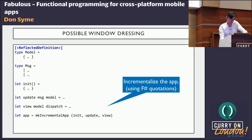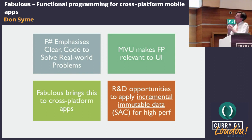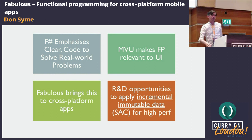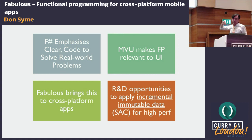To summarise: I've told you a little bit about F-Sharp — clear code to solve real-world problems. MVU makes functional programming very relevant to UI, and that message is starting to spread even to the deep depths of Microsoft, where I've talked about this to the people who provide UI frameworks to about half the world's programs. Fabulous brings it to cross-platform apps, and there are applied R&D opportunities around incremental immutable data. Thanks very much.